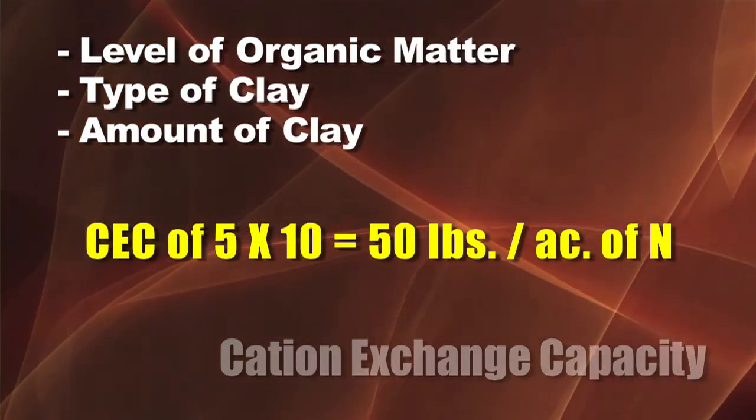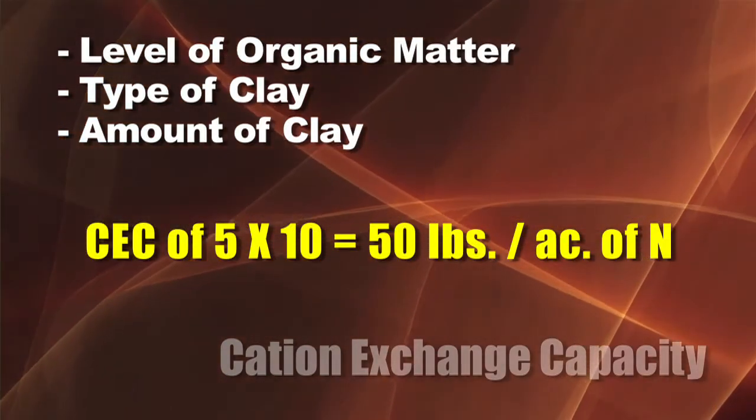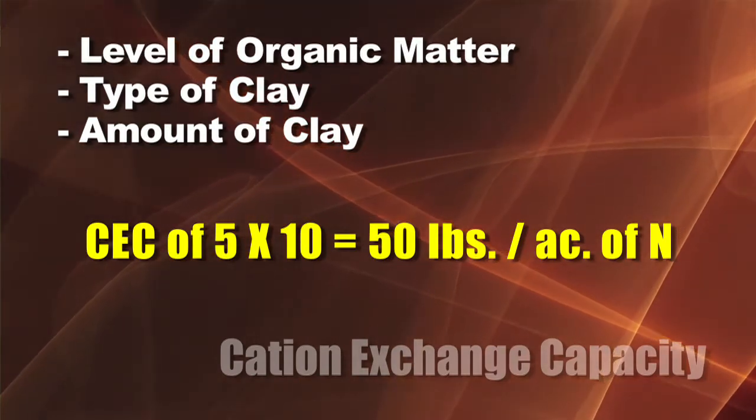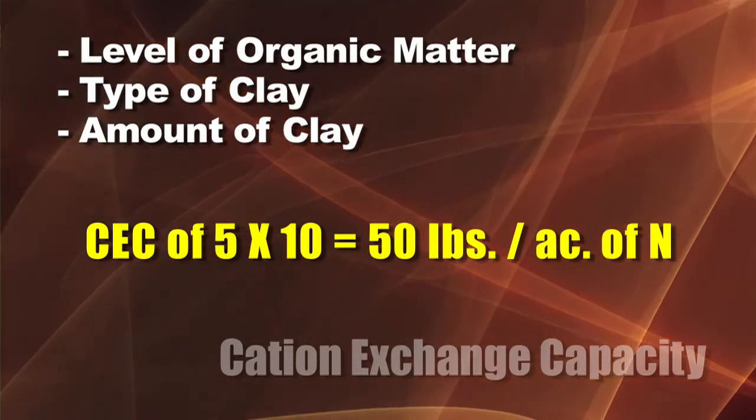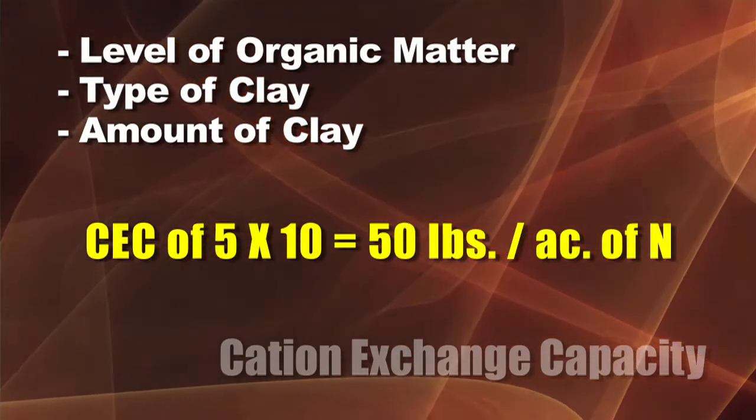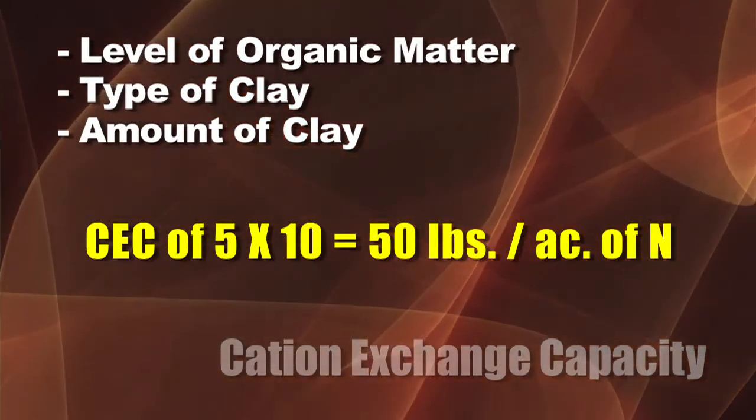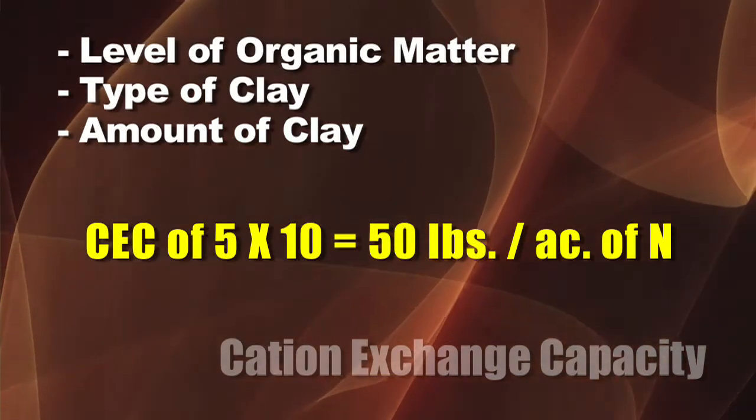For example, if you have a really sandy soil with a CEC of 5, multiply that times 10 and you get 50 pounds of nitrogen that the soil can hold at any one time. That's not very much for a 200-bushel crop. If you need to put out 200 pounds of nitrogen for your crop but can only hold 50 at a time, you're going to have to split-apply that nitrogen throughout the season.